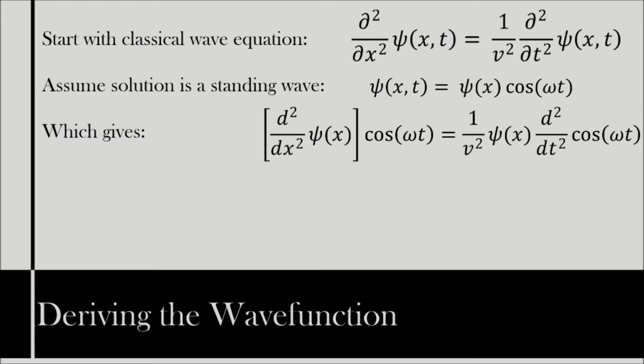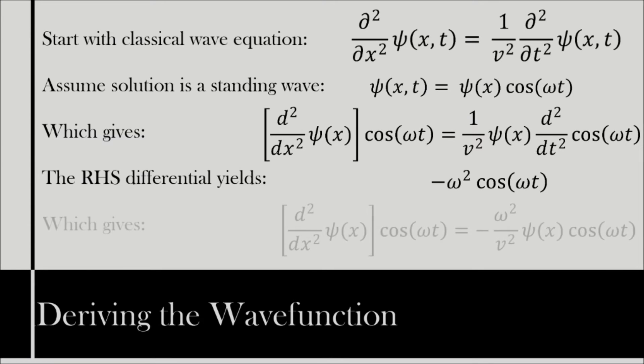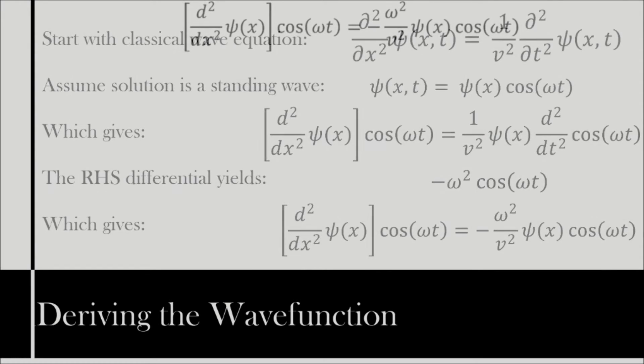Second order differential with respect to x of ψ(x,t) equals 1 over v squared times ψ(x) times the second order differential with respect to t of cos(ωt). Carrying out the differential on the right hand side of the equation, we get minus ω squared times cos(ωt), which we will now substitute back into equation three. Second order differential with respect to x of ψ(x,t) equals minus ω squared over v squared times ψ(x) times cos(ωt).